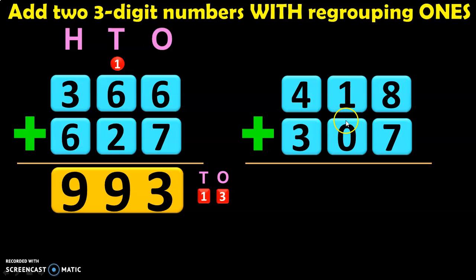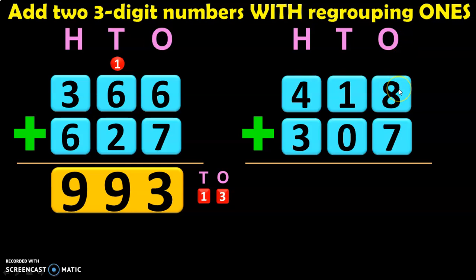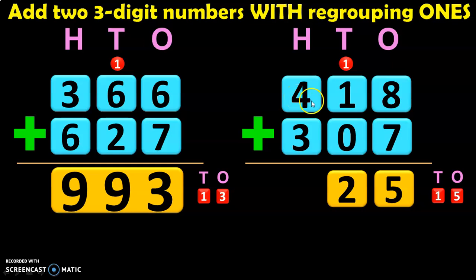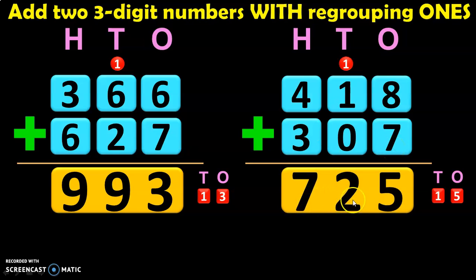Next example: 418 plus 307. Write down the place values: ones, tens, and hundreds. Begin by adding the ones place: 8 plus 7 gives you 15, with 5 in the ones place and 1 in the tens place. So 15 is 1 ten plus 5 ones. Retain the 5 in the ones place and carry over 1 to the tens. Add 1 plus 1 is 2, and 2 plus 0 is 2. Move to the hundreds: 4 plus 3 is 7. So, 418 plus 307 gives you the answer 725.